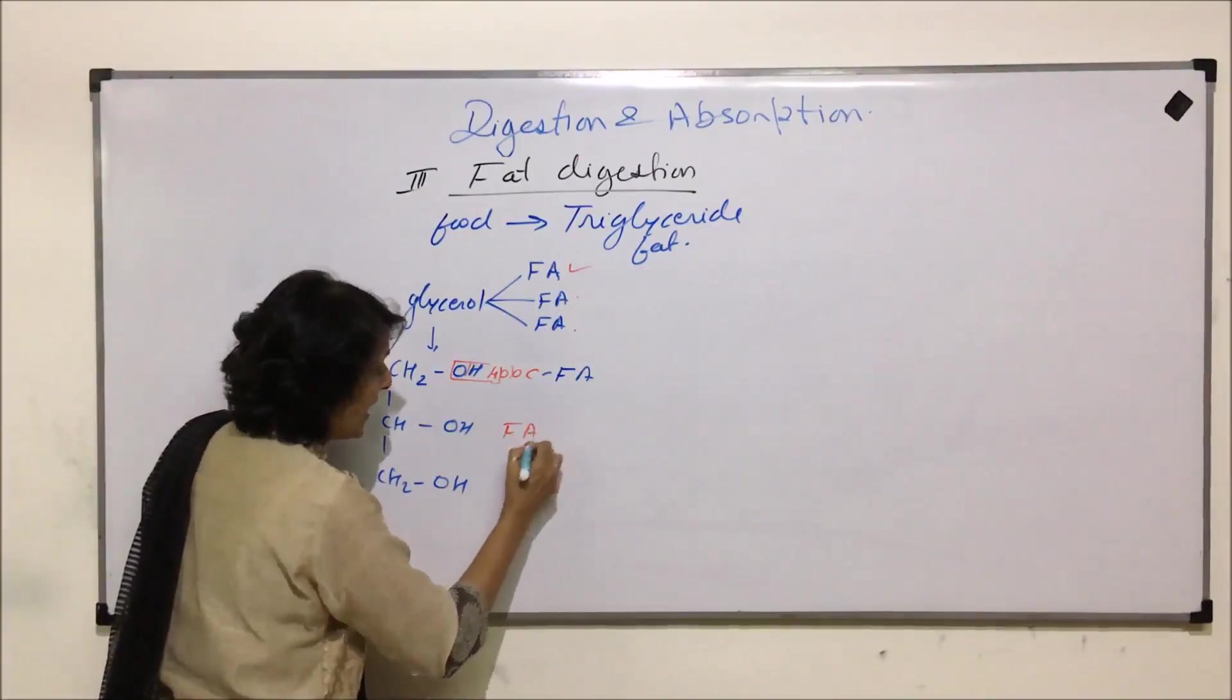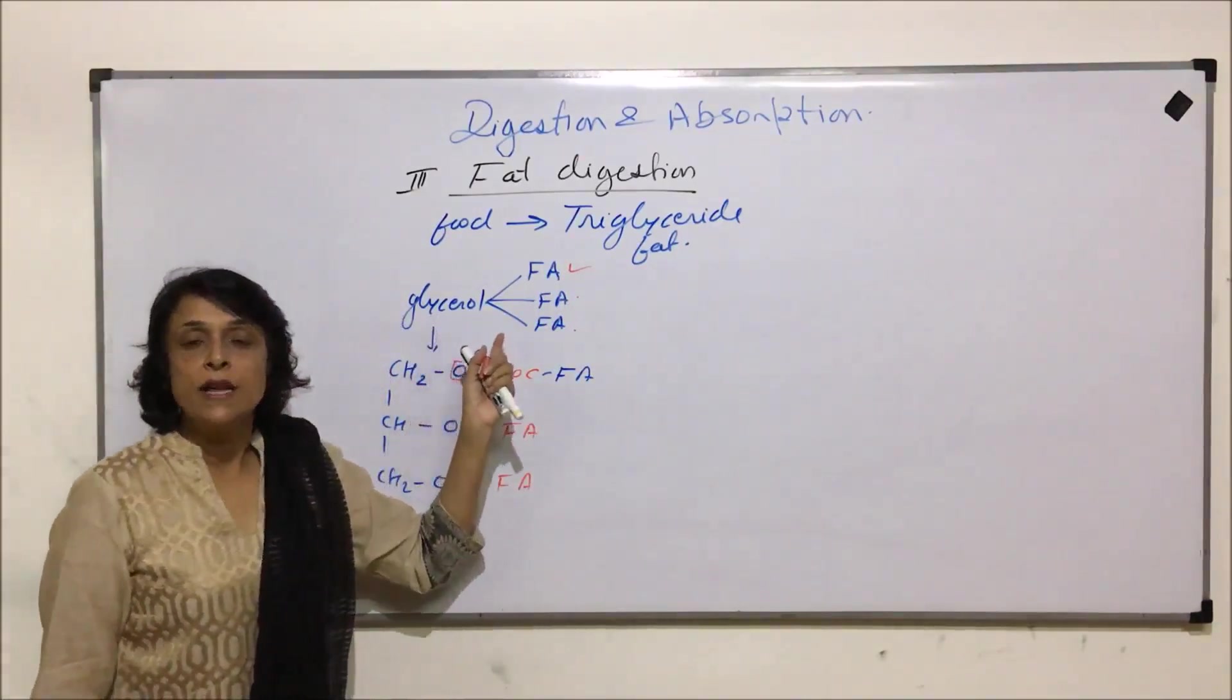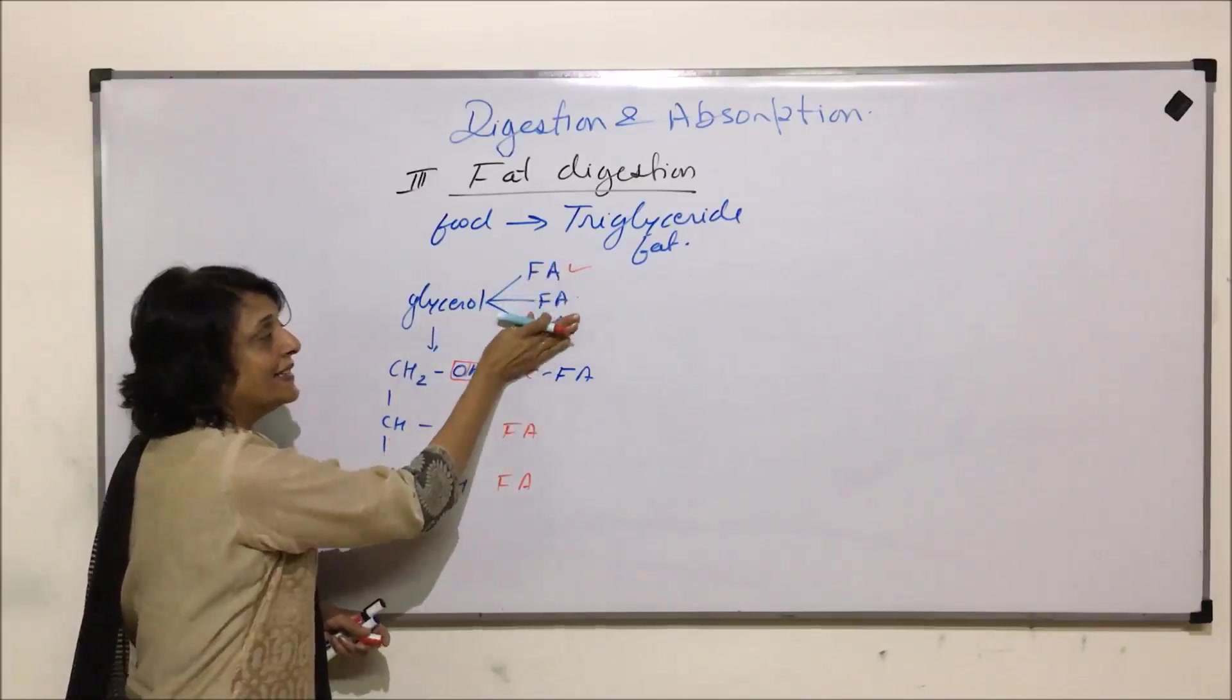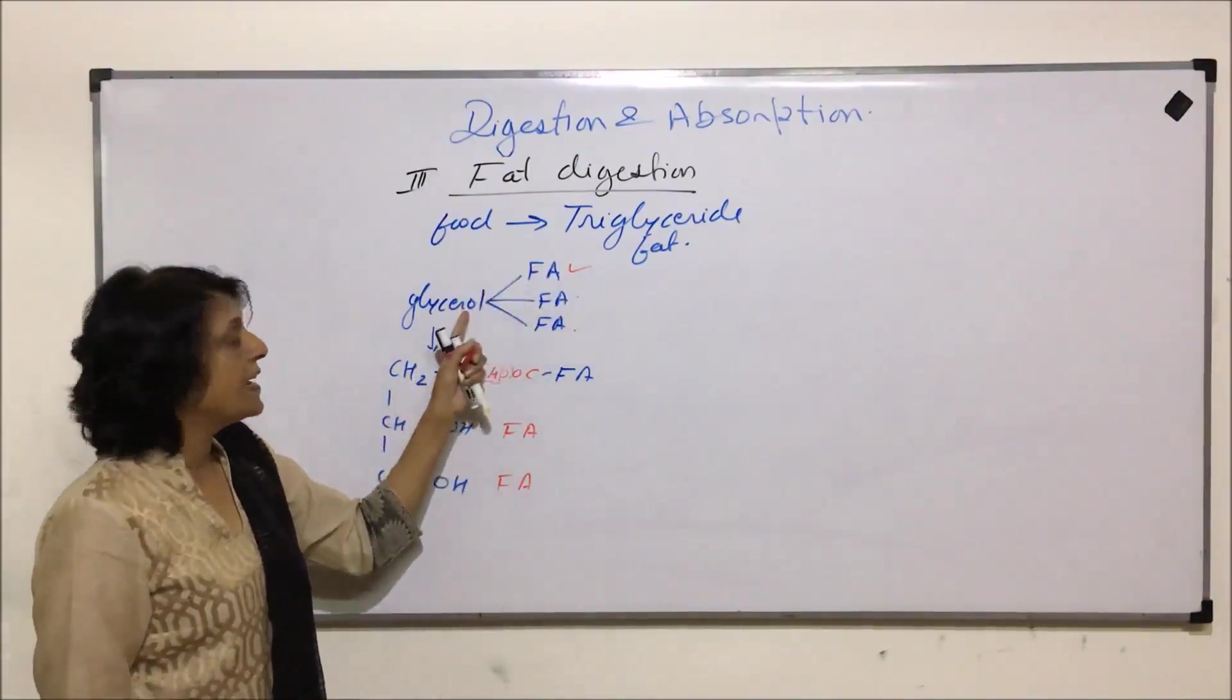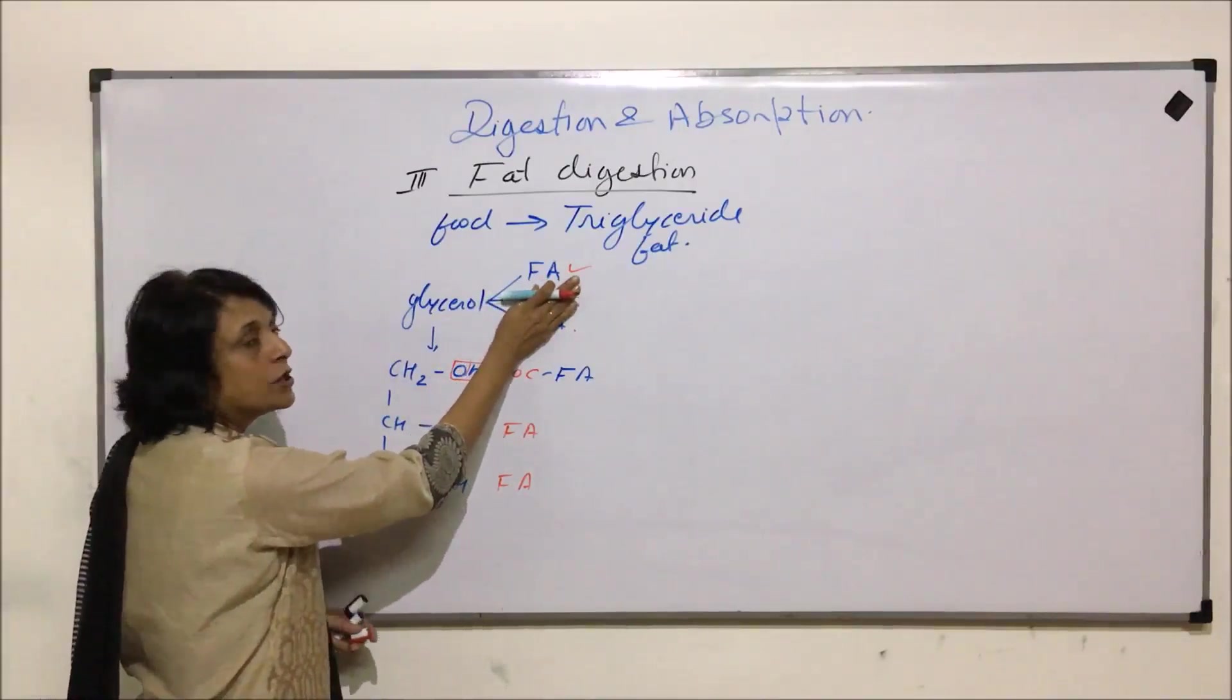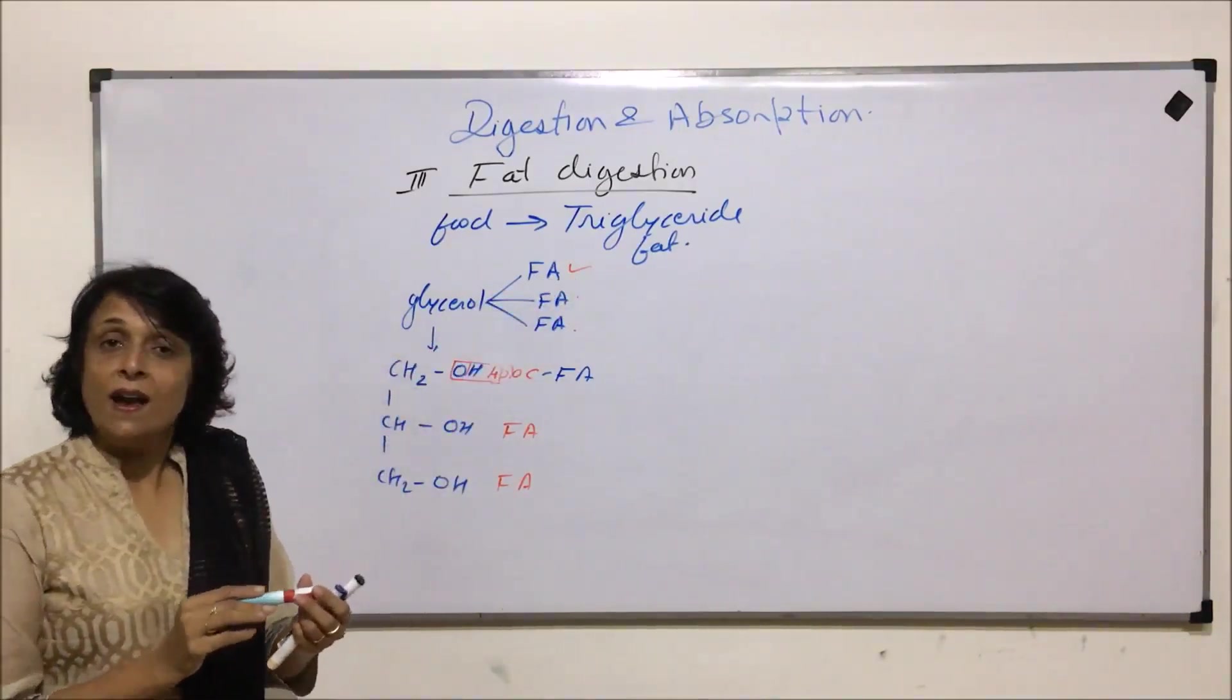Such a fat is known as triglyceride fat. When it is broken down with the help of enzyme, first one fatty acid will be released, so we will get fatty acid and a diglyceride fat. A diglyceride fat would have two fatty acids attached to the glycerol. One more time action, two fatty acids will be released and a monoglyceride fat would result.